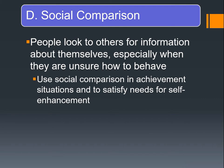Social comparison is when you're comparing yourself to someone else. People look to others for information about themselves, especially when they are unsure how to behave — particularly in achievement situations — to satisfy needs for self-enhancement. Humans are about learning, but it's also about ranking yourself relative to others. I see this with my children when they're playing with friends, noticing who's the fastest runner, who's the strongest, who can do a cartwheel.